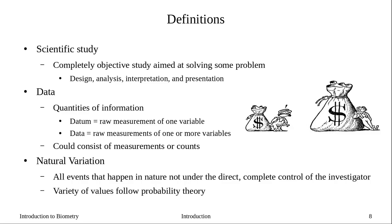Statistics is all about managing natural variation, so we need to define it. Natural variation refers to all the events that happen in nature that are not under the direct or complete control of the investigator. For example, if we grow plants and measure their height — with treatment one being water and treatment two being Miracle-Gro — we can control the treatments, but we can't fully control the amount of light each plant receives. That variation in height due to light differences is natural variation.